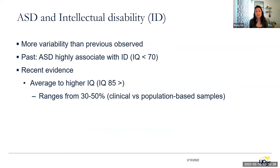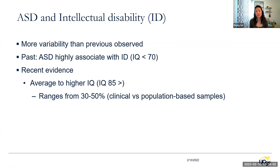We want to think about intellectual disability and autism. There is more variability than initially thought — in the past ASD was highly associated with intellectual disability, but population-based samples now show those with average IQ or higher make up about 50% in population samples and 30% in clinical samples. Even if someone has ID, we should still consider whether they might be presenting with ASD as well.